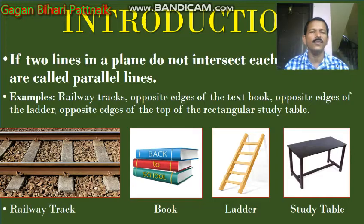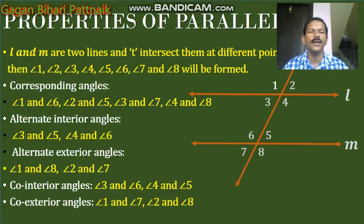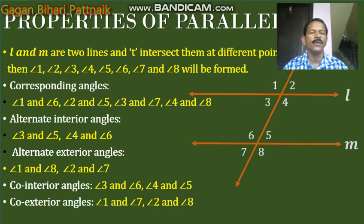Now, properties of parallel lines. L and M are two parallel lines and T is the transversal intersecting them at two different points, forming angles 1 through 8. Corresponding angles: angle 1 and angle 6, angle 2 and angle 5, angle 3 and angle 7, angle 4 and angle 8. Alternate interior angles: angle 3 and angle 5, angle 4 and angle 6. Alternate exterior angles: angle 1 and angle 8, angle 2 and angle 7. Co-interior angles: angle 3 and angle 6, angle 4 and angle 5. Co-exterior angles: angle 1 and angle 7, angle 2 and angle 8.